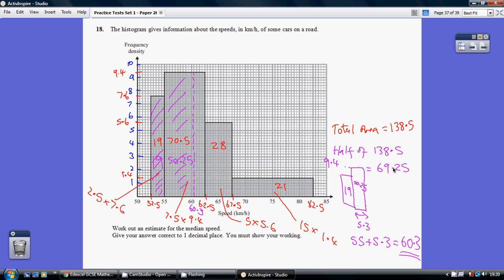This area here which I've done in purple has to be an area of 50.25. Now, given that the height of that bar is 9.4, the base of that portion of the rectangle is going to be 50.25 divided by 9.4, which gives me 5.3. That's where my 5.3 comes from. So I need to go 5.3 along this base here. 55 add 5.3 gives me my 60.3.